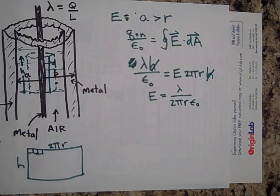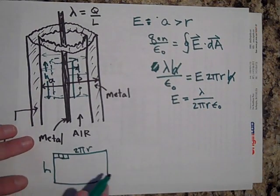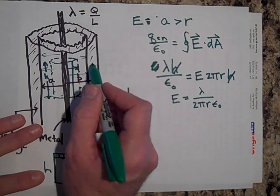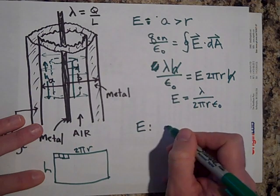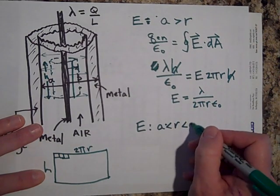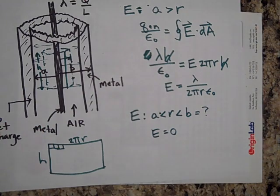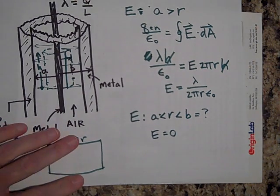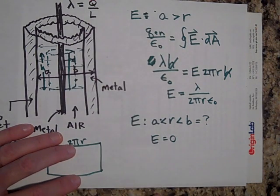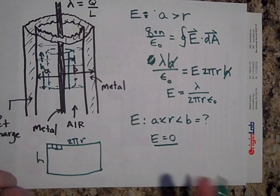What about the electric field inside the metal, where r is between a and b? That's a metal, so any metal in electrostatic equilibrium must have E equal to zero in there. I'm not using Gauss's law to get that — I'm just saying it's a metal. If E were something other than zero, the charges would be moving around, so that wouldn't be electrostatic equilibrium.